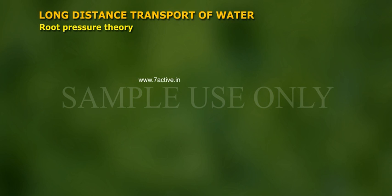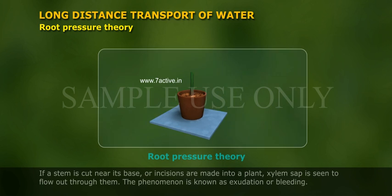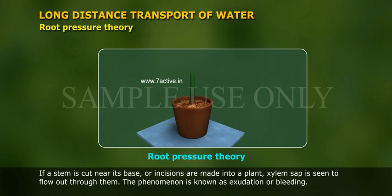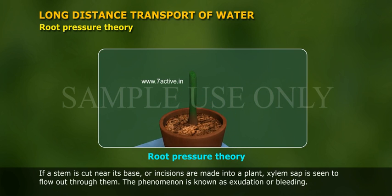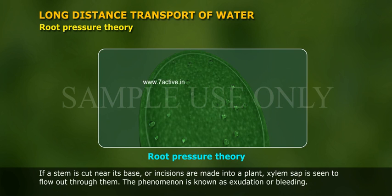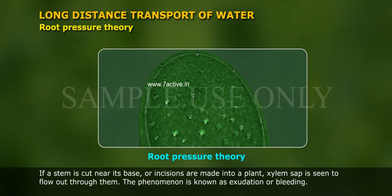Root Pressure Theory. If a stem is cut near its base, or incisions are made into a plant, xylem sap is seen to flow out through them. The phenomenon is known as exudation or bleeding.